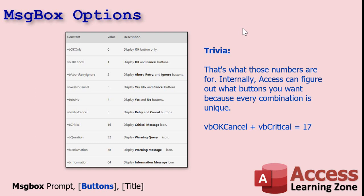For the technical people — those values get added together internally so you get a unique combination. For example, if you pick OKCancel, that's 1, and critical is 16 — that adds up to 17. Access knows there's only one possible way to get 17, and it's those two options. That's technically how it works. Do you have to remember this? No. Do you have to use these numbers at all? No. Just some trivia because it's sometimes cool to learn this stuff.